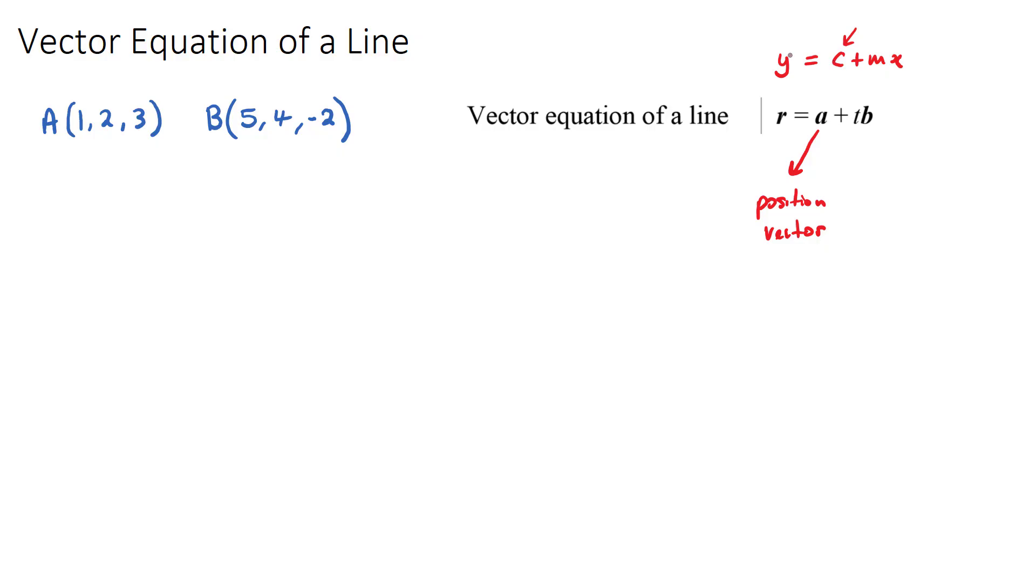And in our coordinate geometry equation of a line, x was some variable, which is the same as t, and m was the direction, the gradient, and that's what actually b is. It's the direction vector. So there's a lot of similarities between these two, because it's actually the same. It's the equation of a line, just in a vector format.